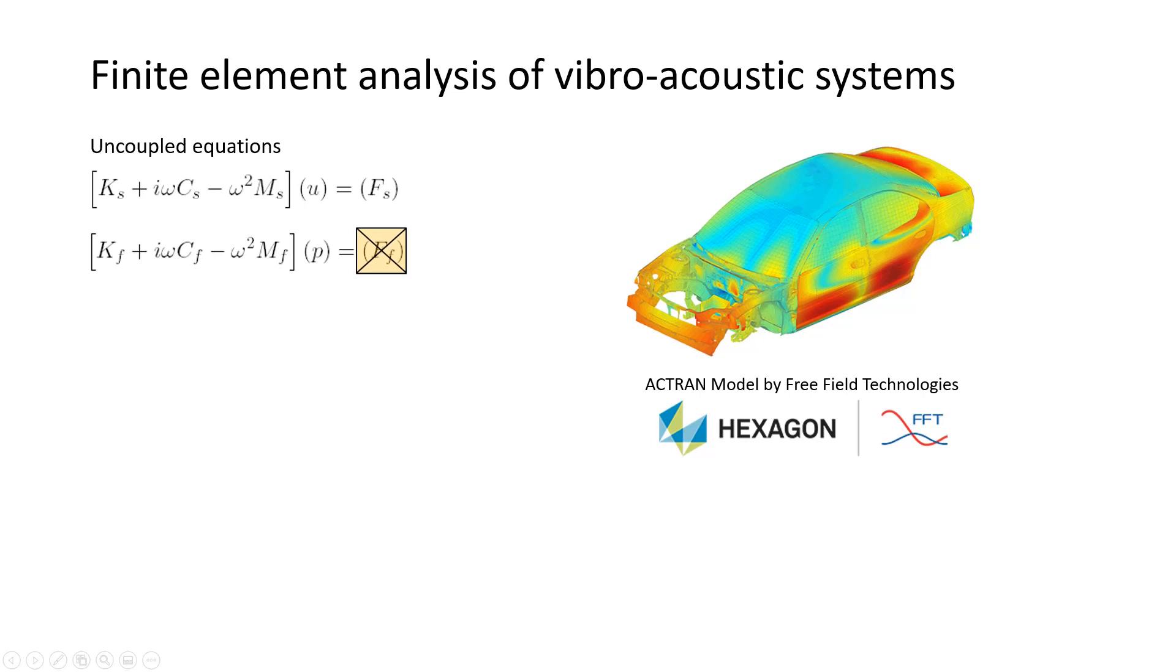Now, these are what is called uncoupled equations. The first set of equations describes the structure. The second set of equations represents the fluid, the acoustic fluid. And so to create a coupling, a coupled system, we have to write relationships between the two sets of unknowns between displacement and pressure. And we know that there are actually two mechanisms that must be represented.